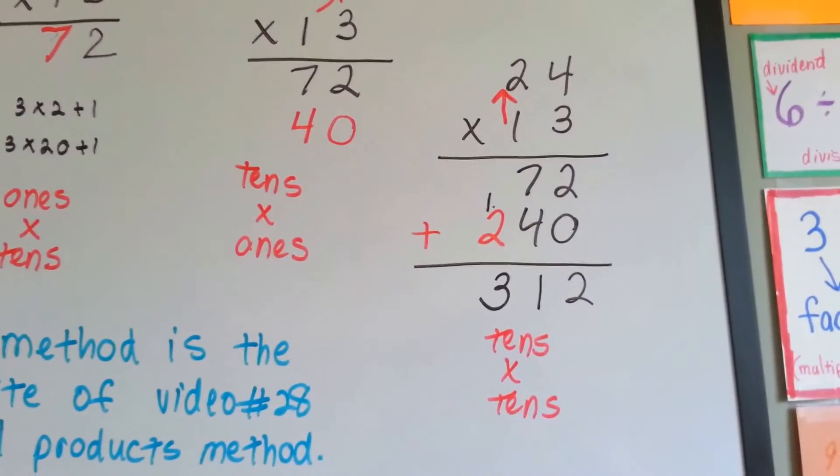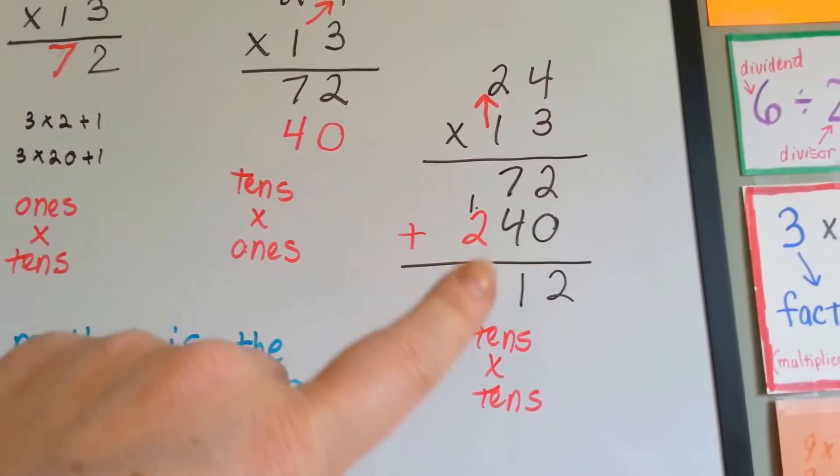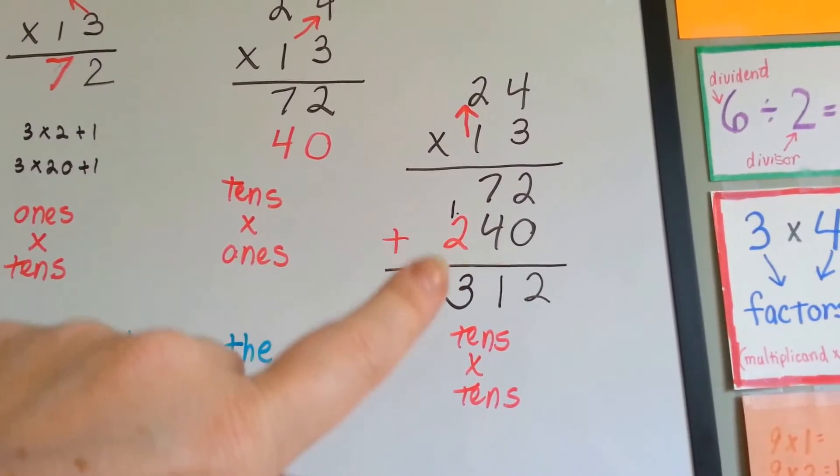0 plus 2 is 2, 7 plus 4 is 11, carry the 1 and put the 1 down, and 2 and 1 is 3.